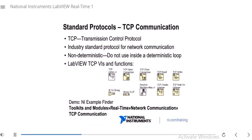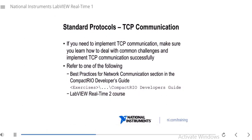For a demo of how TCP functions work, go to the Example Finder under Help, and navigate to the location shown on the slide. There are examples with a single client and single server, and ones with multiple clients with a server. If you need to implement TCP communication, make sure you learn how to deal with common challenges such as reading and writing metadata along with your data. For more information about best practices, refer to the Network Communication section in the CompactRIO Developer's Guide, which you can download free from ni.com or find in your exercises folder. You can also refer to the LabVIEW Real-Time 2 course.